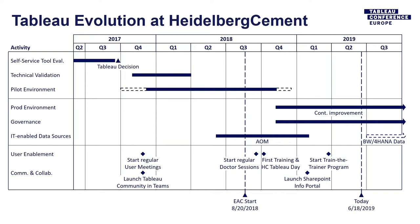By using Tableau to visualize the amount of bitumen per batch, we found we were sometimes overdosing by just a fraction of a percent. This allowed the business to optimize recipes and reduce bitumen usage, and for just a single plant, they were able to save more than 100,000 euros per year — just from visualizing the data. Almost one year later, at end of 2018, we introduced a production environment and began introducing more formal governance. Before that, it was very chaotic, but it worked, and users were happy to use the tool.